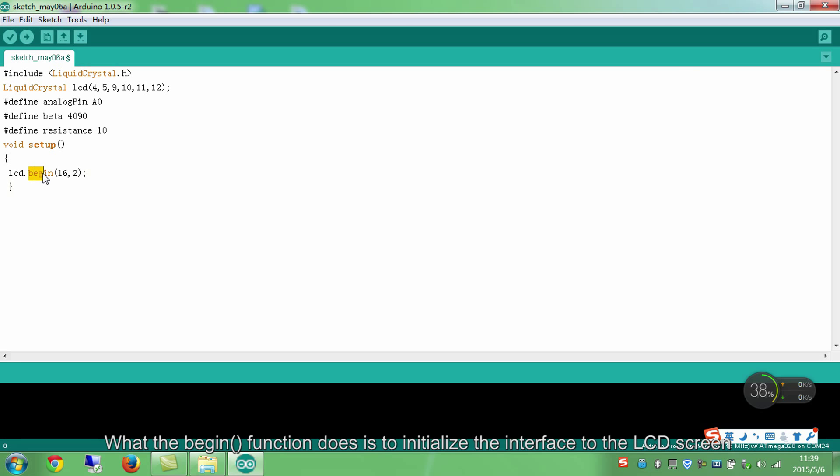What the begin function does is to initialize the interface to the LCD screen and specify the dimensions like width and height of the display. It should be called before any other LCD library commands. The general format is LCD.begin columns rows. Here set the display as 2 rows and 16 columns. The clear function, you can tell by its name is to clear the LCD screen and position the cursor at the upper left corner.